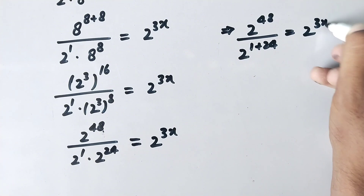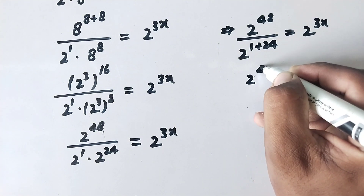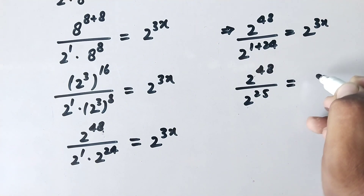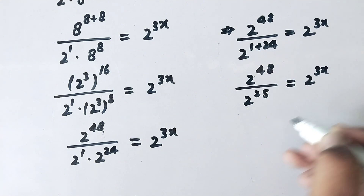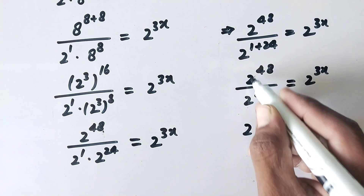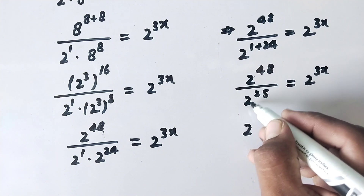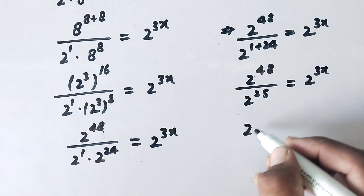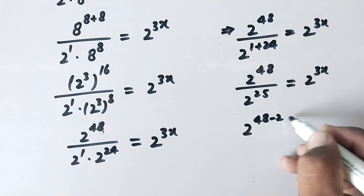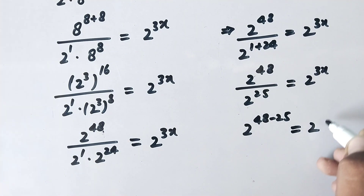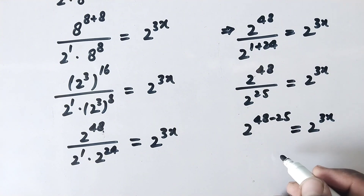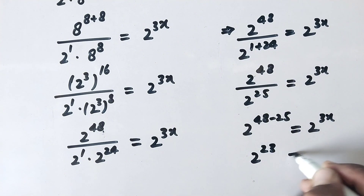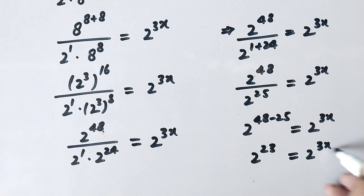This implies 2 to power 48 over 2 to power 1 plus 24, equals 2 to power 3x. So it becomes 2 to power 48 over 2 to power 25, equals 2 to power 3x. Since the bases are the same in numerator and denominator, we subtract the powers: 2 to power 48 minus 25 equals 2 to power 3x, giving 2 to power 23 equals 2 to power 3x.